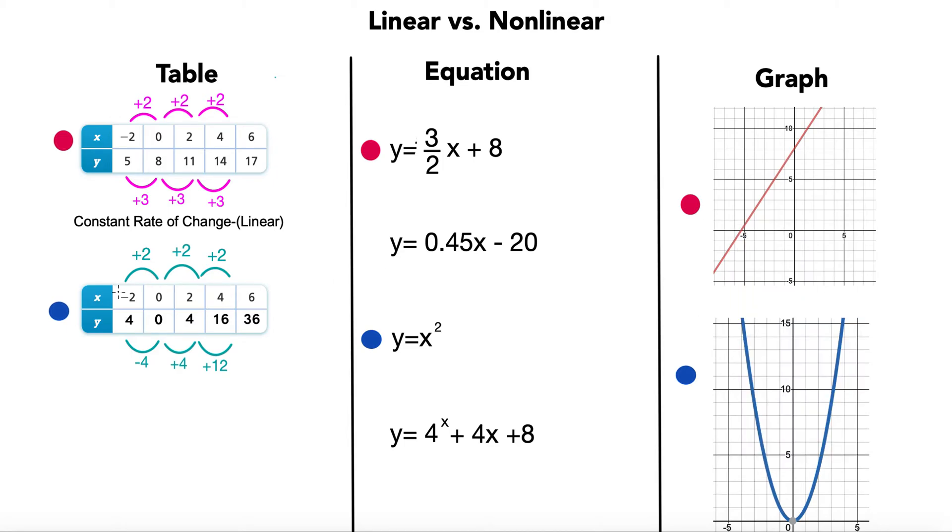So in this table, we have the same change in our X values. It's going up by two every time. But if you take a look at the Y values, it starts at four, then it goes down to zero, and then it goes up to four again, and then it goes up to 16 and up to 36. The change went down four, up four, up 12, and then up 20 for the next one.